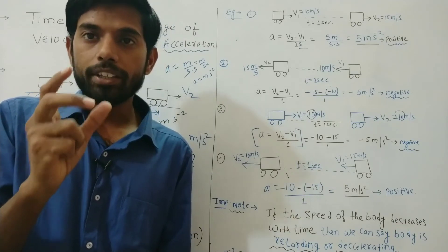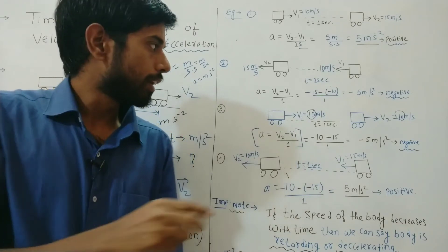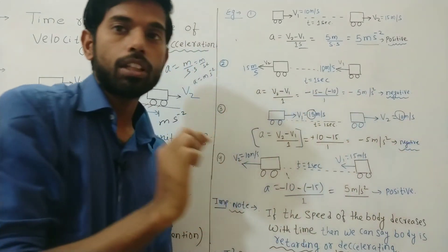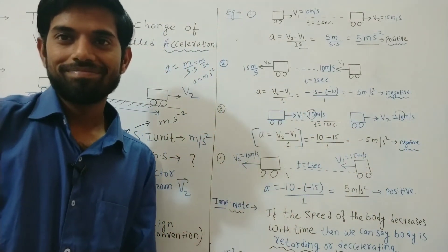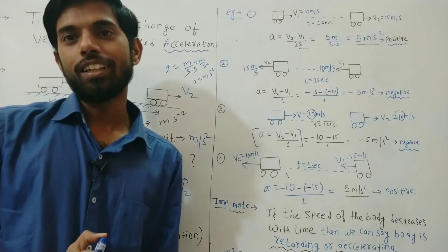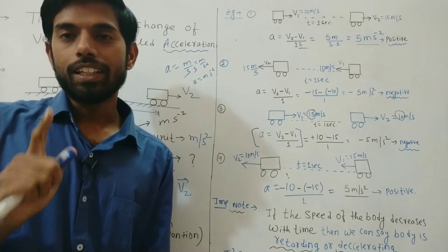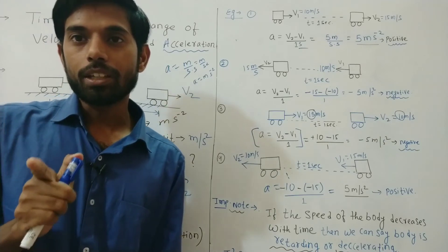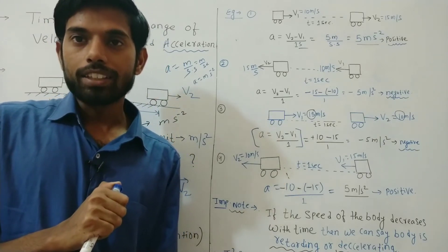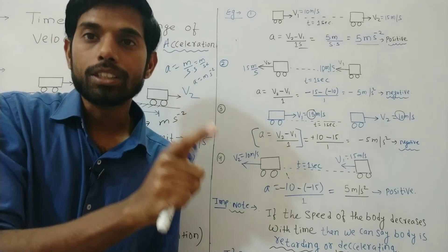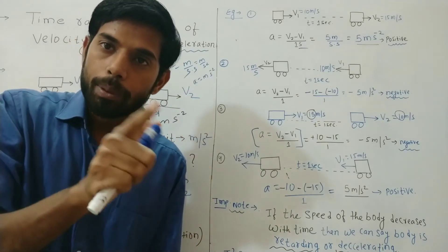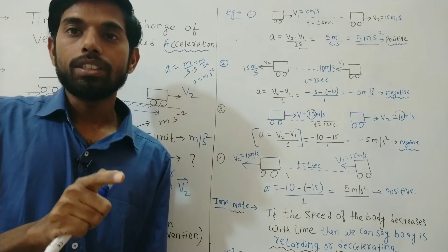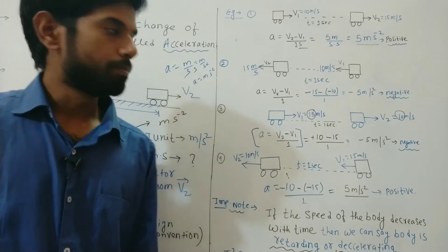Speed is the magnitude of velocity — here you can see 15 to 10; these values give the speed. So retardation means there is a decrement in speed, and acceleration means there is an increment in speed. Acceleration may be positive or negative, but retardation specifically means there is a decrement in speed.